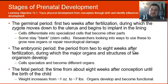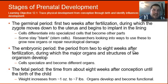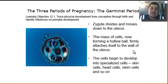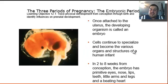The embryonic period is from about two to eight weeks after fertilization, when the major organs and structures begin to develop and cells specialize into different organs. The fetal period is everything after that — from eight weeks after conception until nine months. The weight increases from about one ounce at the start of the fetal period to an average of about seven pounds at birth, and organs develop and become functional during this time.